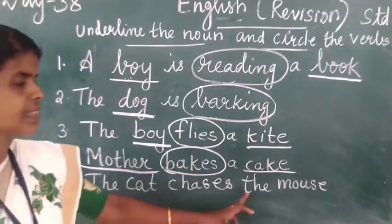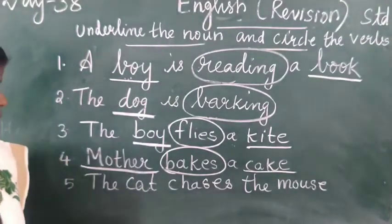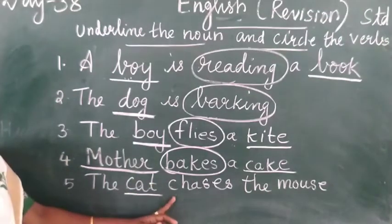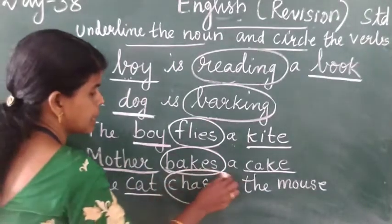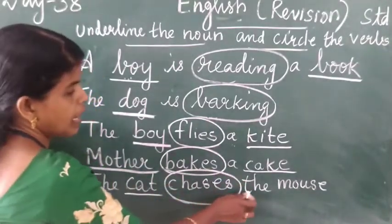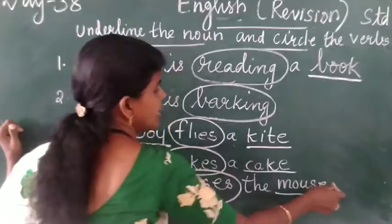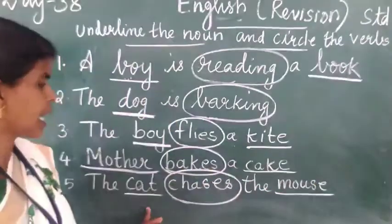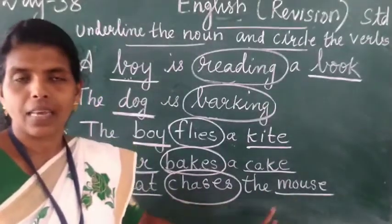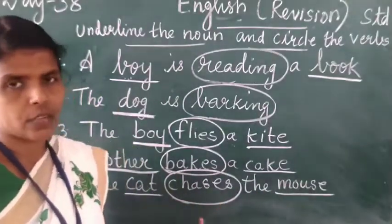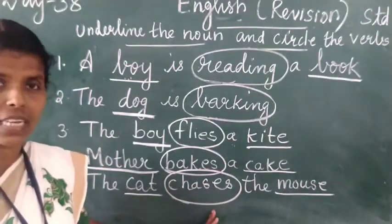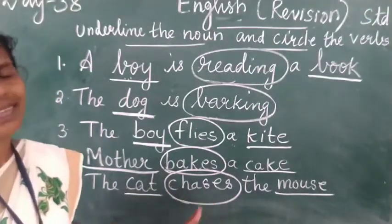Next, last sentence: The cat chases the mouse. Cat is the name of an animal — that is a noun. Chases is the action word — that is the verb. Mouse is also the name of an animal — that is a noun. So cat and mouse are nouns, and chases is the verb.